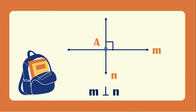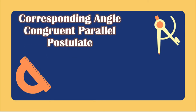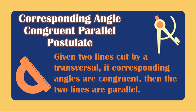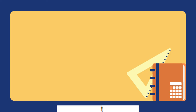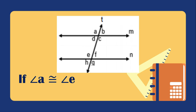Let's look at theorems and postulates for perpendicular and parallel lines. The corresponding angle congruent parallel postulate states: given two lines cut by a transversal, if corresponding angles are congruent, then the two lines are parallel. In this figure, angle A is congruent to angle E because they are corresponding angles, so the conclusion is M is parallel to N.